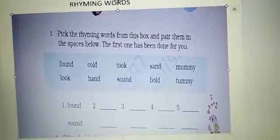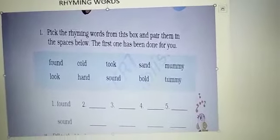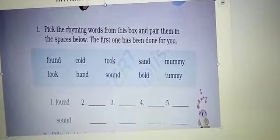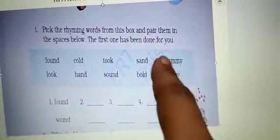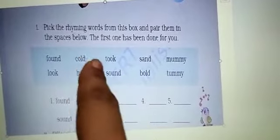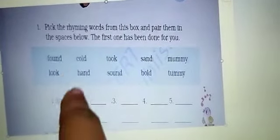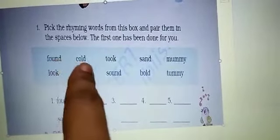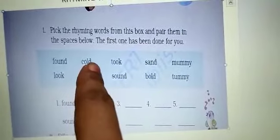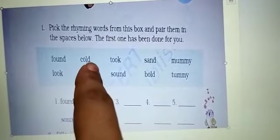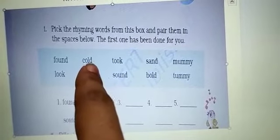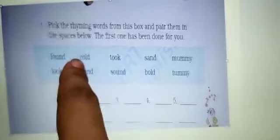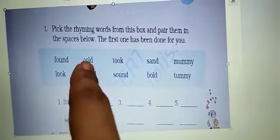You can see 'found' and 'sound' as the first example. Then this is the given box and you have to find the rhyming words from it. You can see the word 'cold.' The rhyming word of cold is — just speak these words aloud.